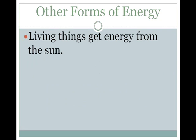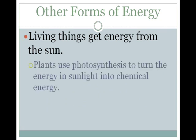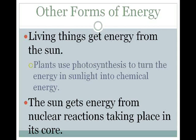Living things also get energy from the sun. Plants use photosynthesis to turn the energy in sunlight into chemical energy. We've already talked about non-mechanical energy being at the level of the atom and having chemical energy in a chemical reaction. Living things actually use the energy from the sun to transform it into chemical energy. The sun gets its energy from nuclear reactions taking place in its core, and that's how it continues to produce so much heat.